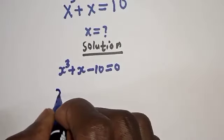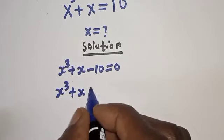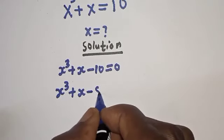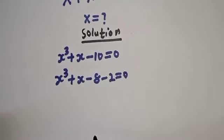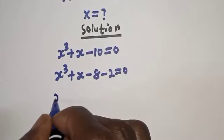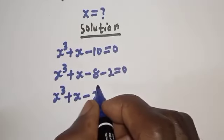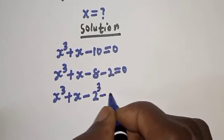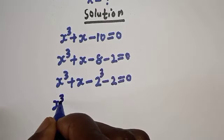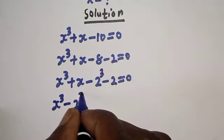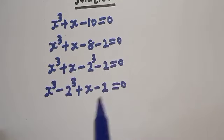Then s raised to power 3 plus s minus 10 can be written as s raised to power 3 minus 2 raised to power 3 plus s minus 2 is equal to 0.